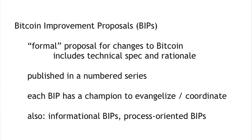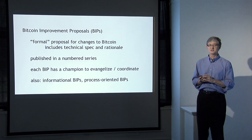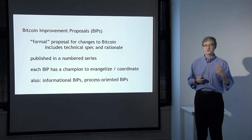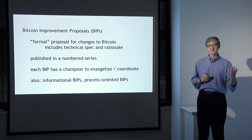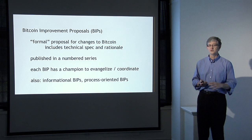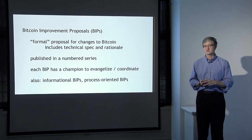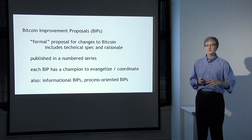Another related piece of machinery is Bitcoin Improvement Proposals, or BIPs. These are formal proposals for a change to Bitcoin. An improvement proposal will include a technical specification for a proposed change as well as a rationale for it. If you have an idea about how to improve Bitcoin by making some technical change, you're encouraged to write up one of these documents and publish it as part of the Bitcoin improvement proposal series, which will kick off a discussion within the community about what to do.